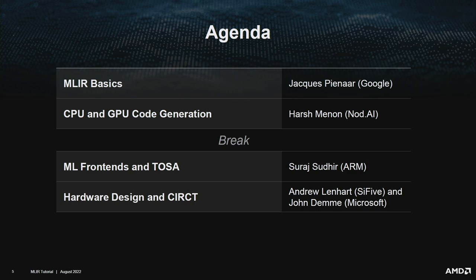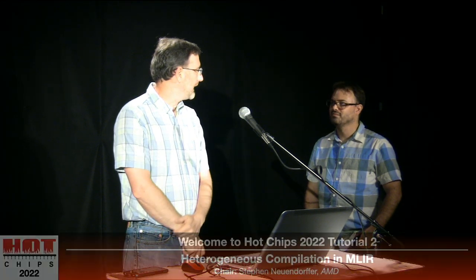Our agenda today: Jacques will talk about MLIR basics, followed by a talk on CPU and GPU code generation. Then we switch to end-to-end flows — Siraj talking about machine learning front ends and a framework Arm has been developing called TOSA, and then FPGA and ASIC back ends with a project called Circuit. I'll now introduce Jacques, who is from Google and has been involved in MLIR since the very beginning.